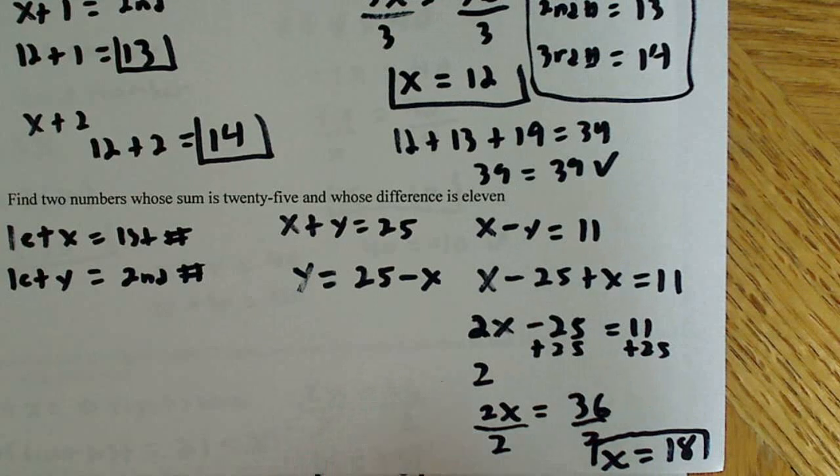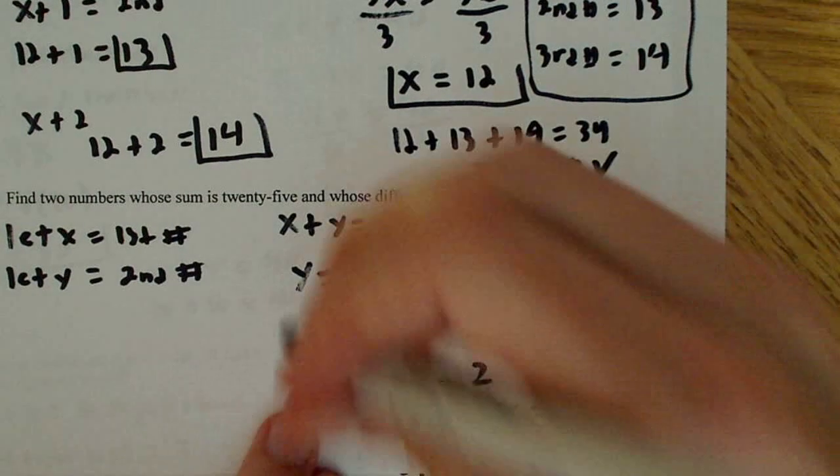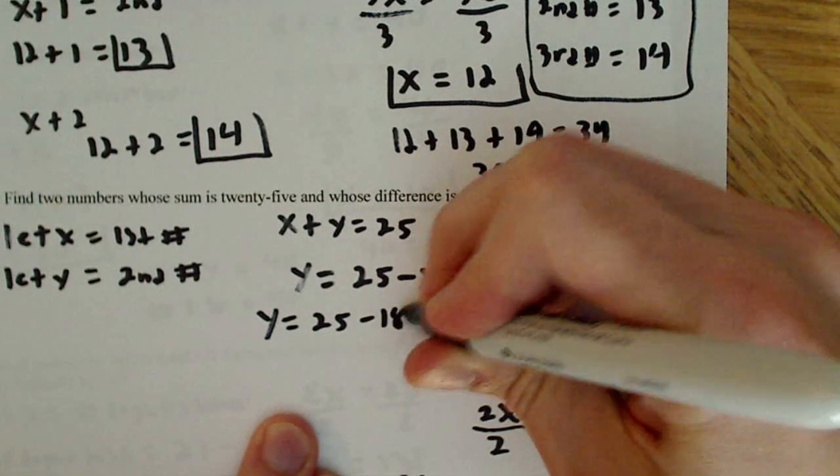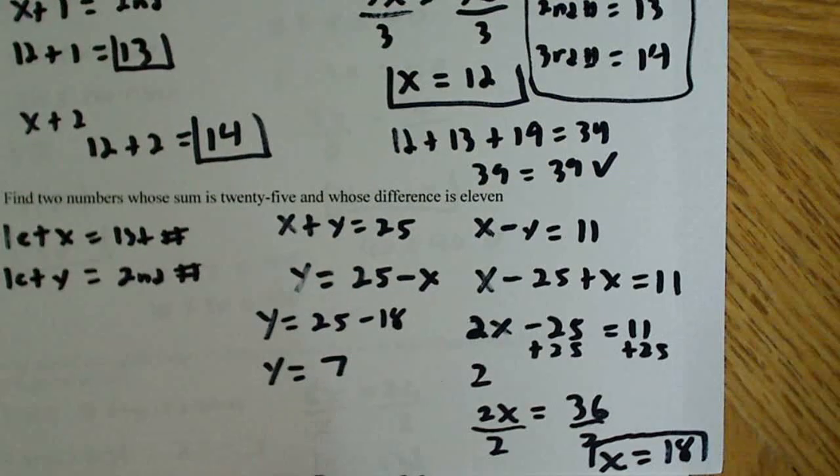So that's our first number. Now we need to know what y is. And we have a nice little equation that already has y is equal to 25 minus 18. So y is equal to 7.